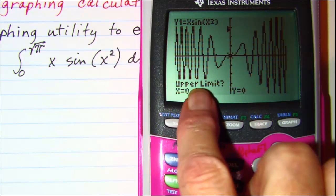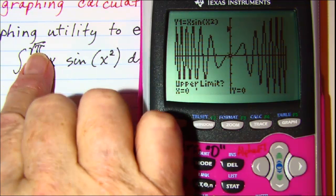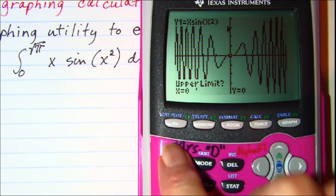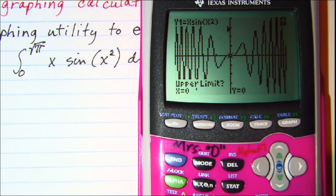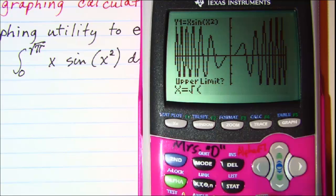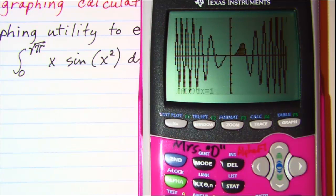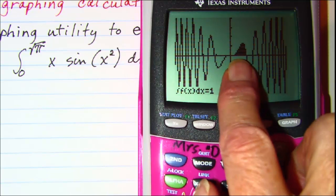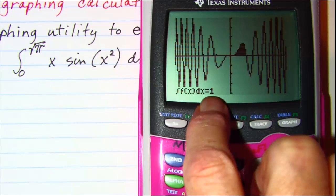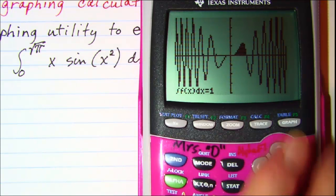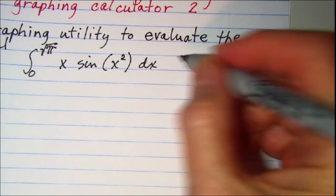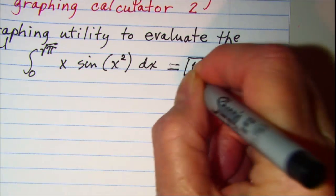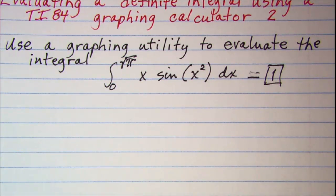Then the next thing is our upper limit and we want the square root of pi so square root of and then pi close our parentheses and hit enter. So we can see then that the area under the curve is shaded and we do indeed get 1 as the integral. Thank you.